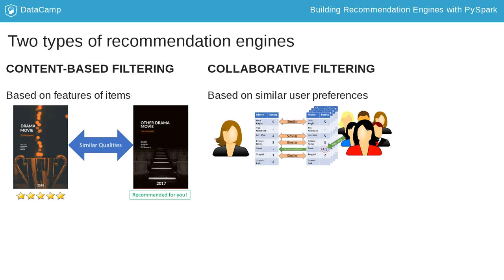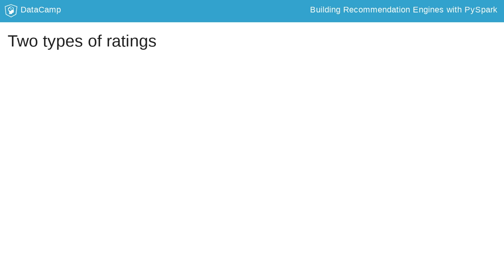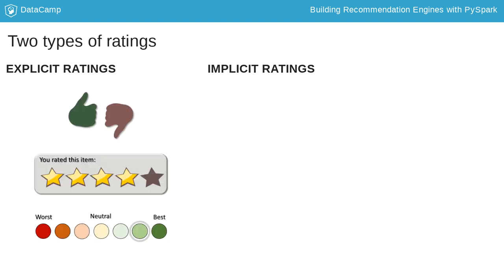Now let's talk about ratings. In the realm of recommendation engines, there are two main types of ratings: explicit ratings and implicit ratings. Explicit ratings are pretty straightforward — examples include inputting a number of stars or something like a thumbs up or thumbs down, because users explicitly state how much they like or dislike something.